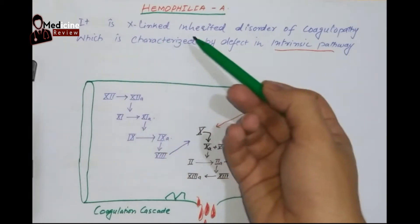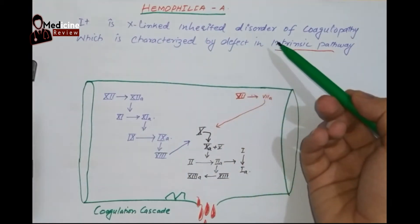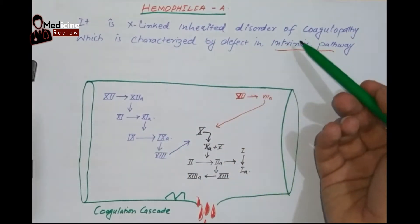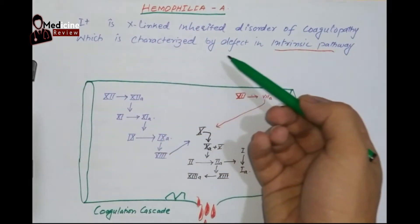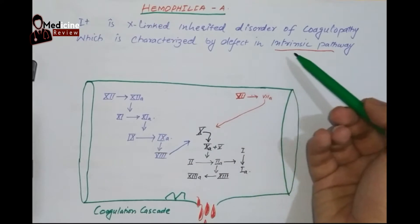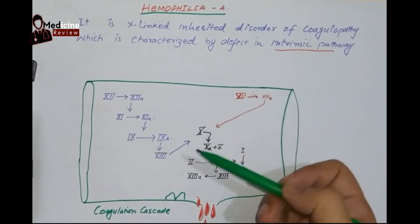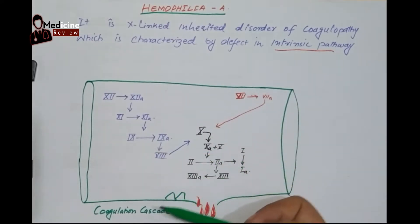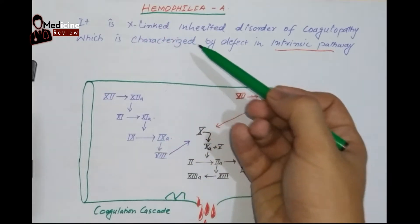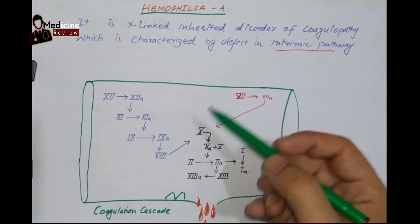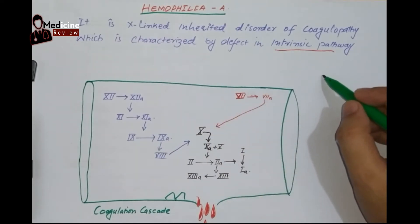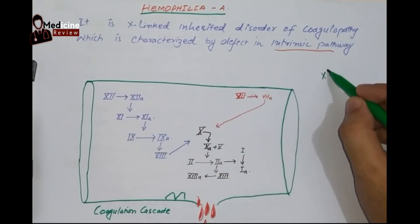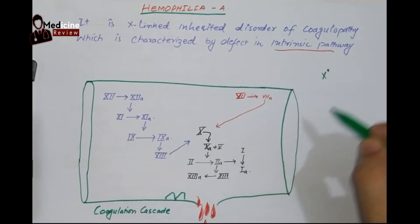Basically, it is an X-linked inherited disorder of coagulopathy which is characterized by a defect in the intrinsic pathway. X-linked disease means when the abnormal gene lies on the X-chromosome.